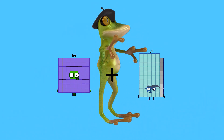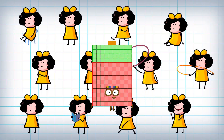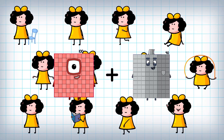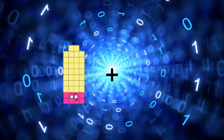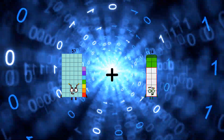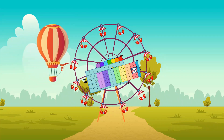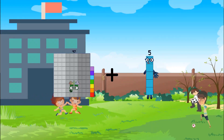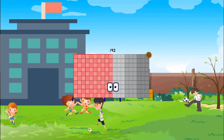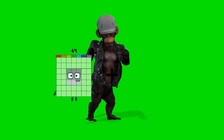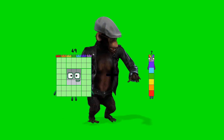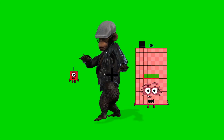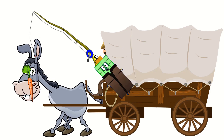64 plus 78 equals 142. 100 plus 90 equals 190. 57 plus 75 equals 132. 97 plus 95 equals 192. 49 plus 90 equals 139. 1 plus 41 equals 42.